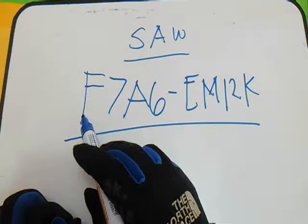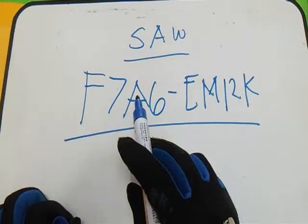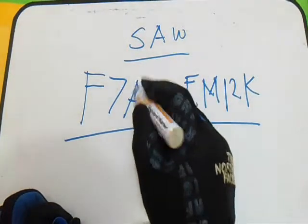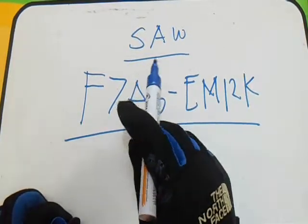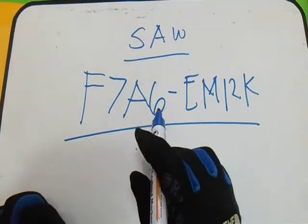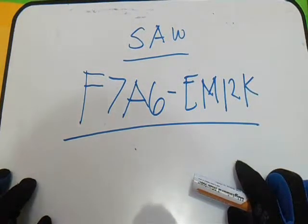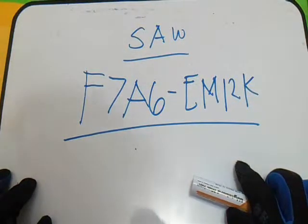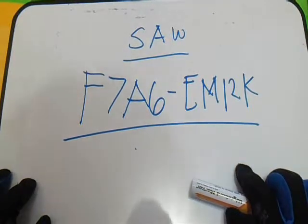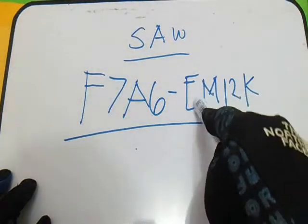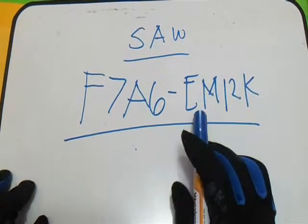F indicates flux. Seven is the tensile strength of 70,000 psi. A is for as-welded. Six is the impact strength, indicating the lowest temperature where we meet or exceed 20 foot-pounds or 27 joules. E indicates a solid electrode.